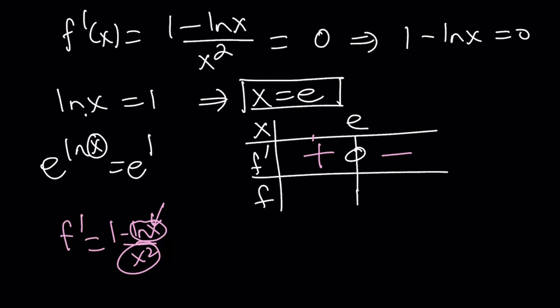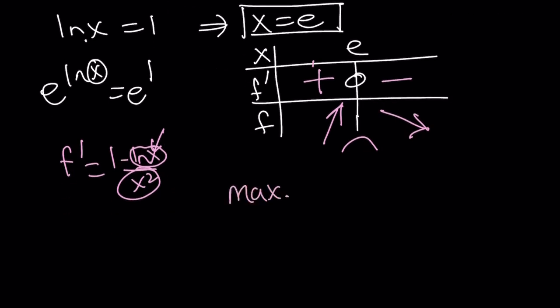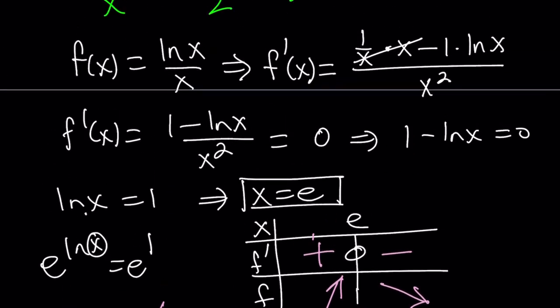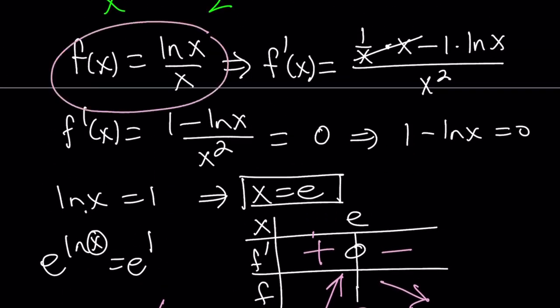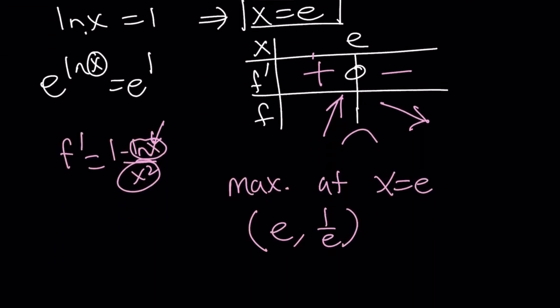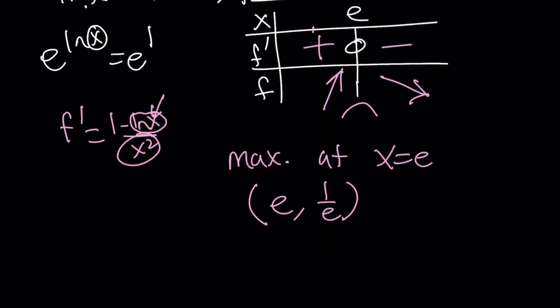This means that our function is going to be increasing on this interval and decreasing on this interval, which also means that it has a maximum at x equals e. So, we have a max at x equals e. To be more specific, it is at e comma 1 over e. Because if you replace x with e in f of x, you get ln e over e, which is 1 over e. So, that's our maximum point for f.